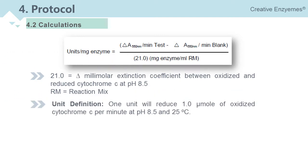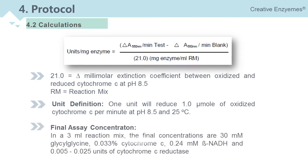Unit definition: 1 unit will reduce 1.0 micromole of oxidized cytochrome C per minute at pH 8.5 at 25 degrees centigrade in a 3 milliliter reaction mix.